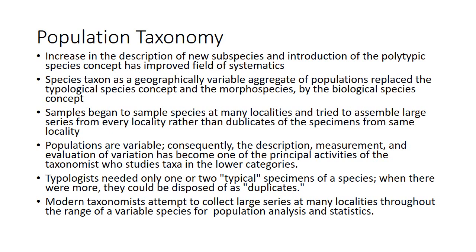A species taxon has developed as a geographical variable and is an aggregate of population which has replaced the concept of morphological species concept, or morphospecies, by the biological species concept. When working on the biological species concept, taxonomists do not like to have duplicates or triplicates, as they are not attractive in taxonomy. Rather, taxonomists need to sample species from various localities and a range of localities to estimate the range of characters of a species.